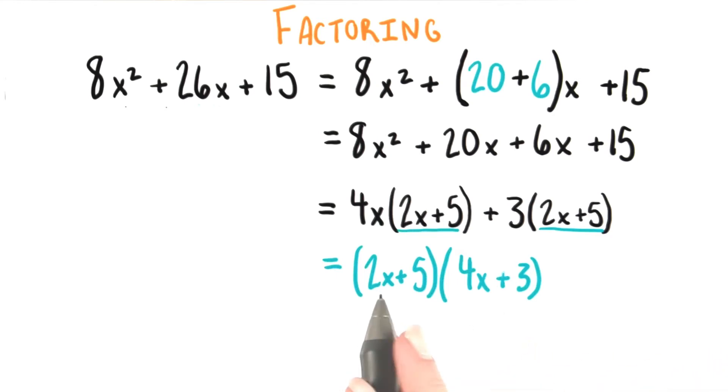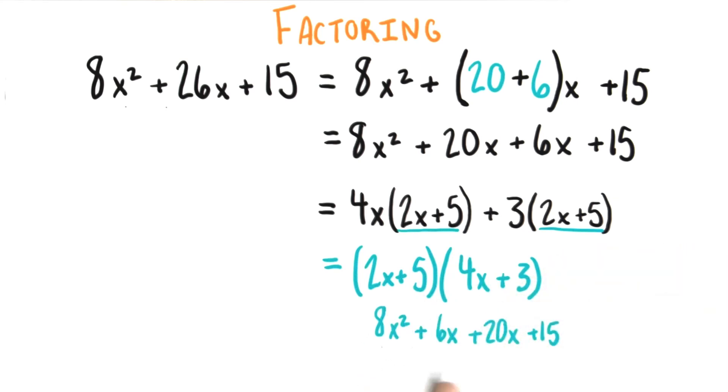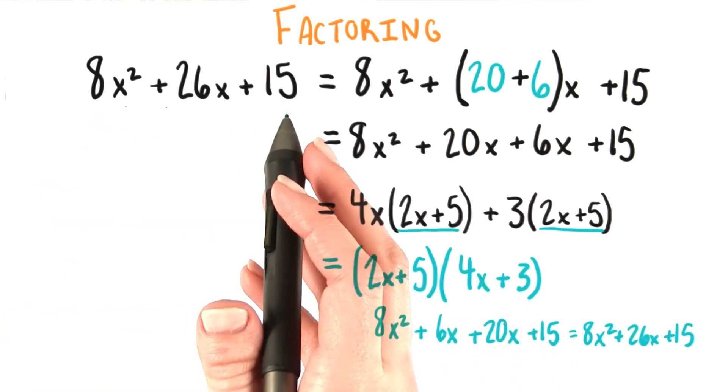Let's check that just to make sure. We multiply 2x by each of these terms, and then we multiply 5 by each of these terms. All we need to do now is add like terms, and voila, we have verified that this factored form is in fact equal to the expression we started out with.